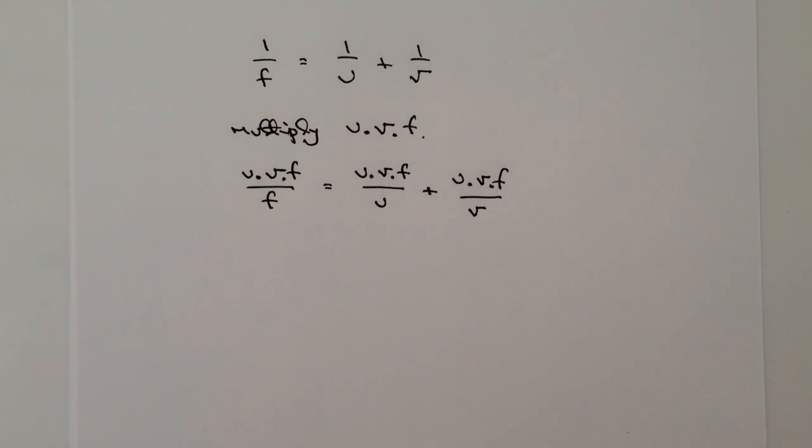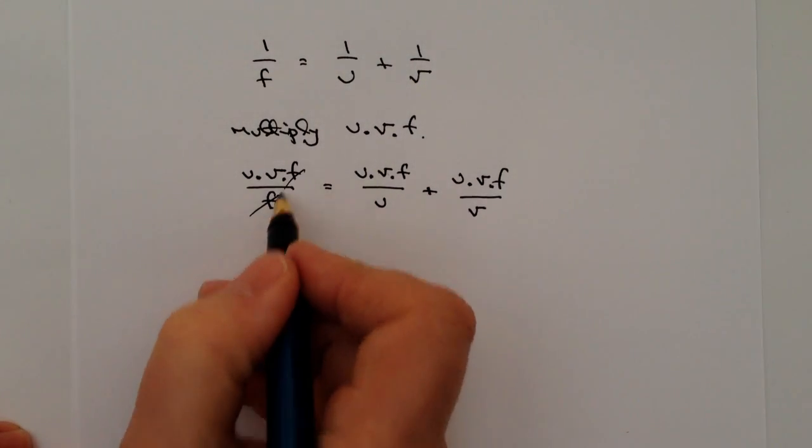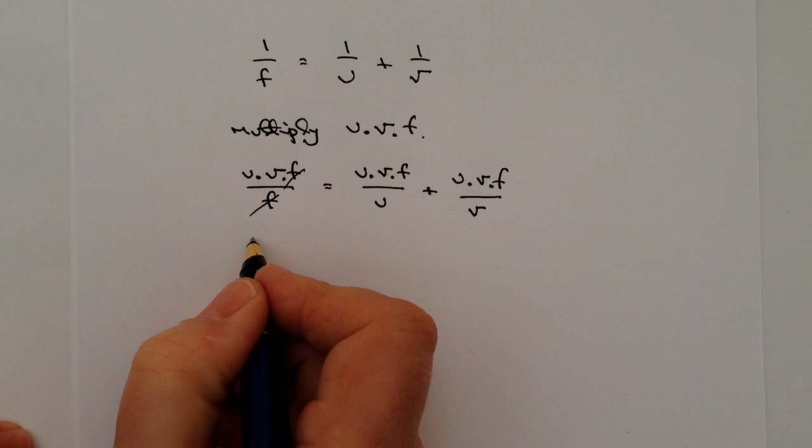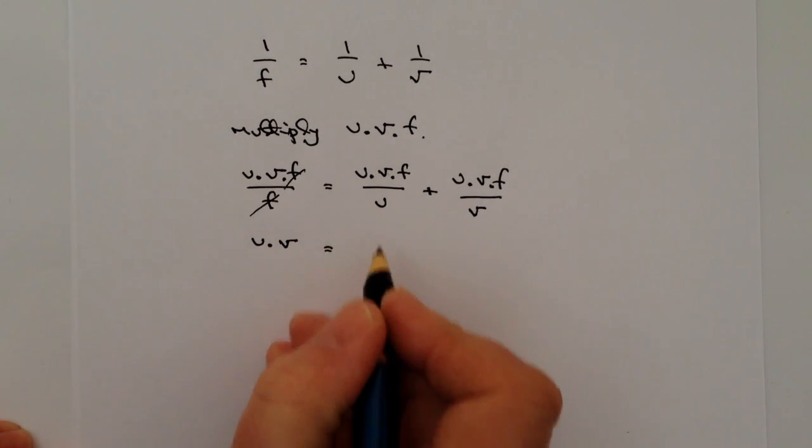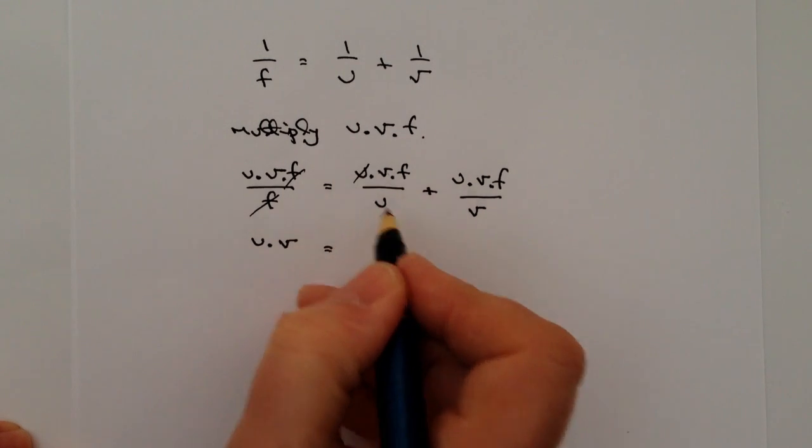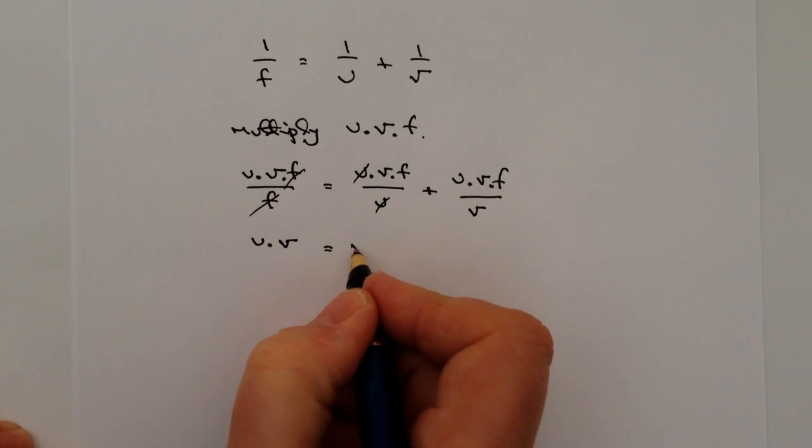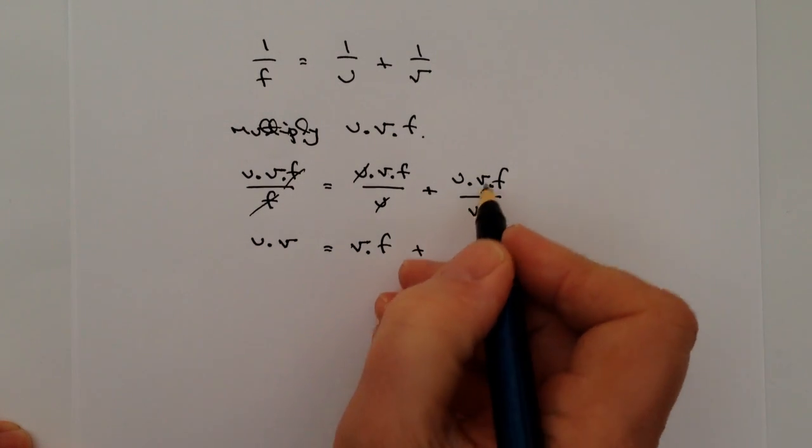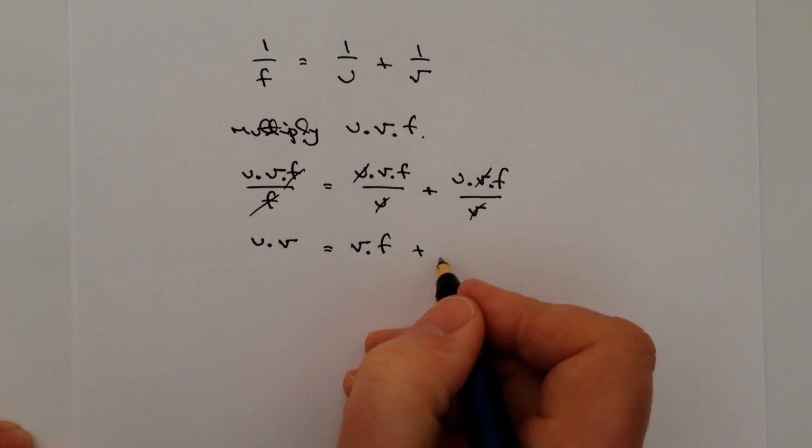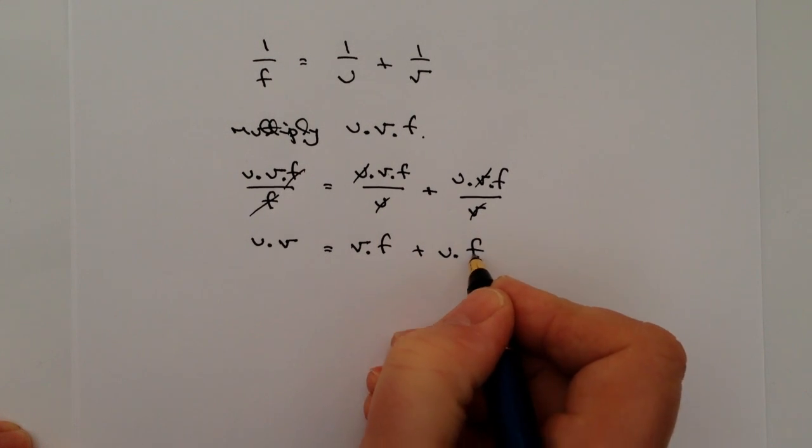Now I appreciate that looks a little bit complex, but the big benefit of working with fractions is that we can cancel them down to make them easier to deal with. So this f and this f I can get rid of and this side becomes u times v. On this equation here I've got the two u's I can get rid of, so that becomes v times f. And on this equation I've got the v's that I can deal with, so that becomes u times f.